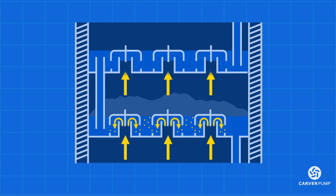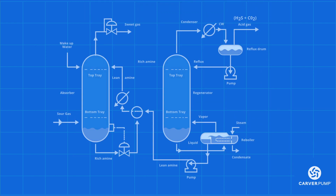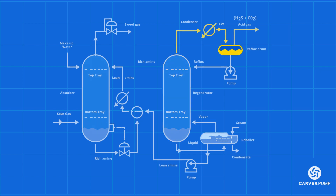Instead of discharging the rich amines, they are pumped to the stripper column, where the acid gases in the amine solution are stripped and the amines reused. The rich amines enter the stripper column from the top. The liquid falls to the bottom while the vapor rises to the top, where it passes through a condenser before discharging the acid gases. Any liquid caught in the condenser is then pumped back into the stripper column.